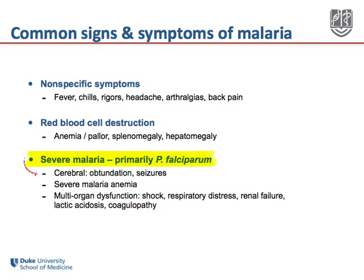One distinct form is cerebral malaria, which is marked by some degree of neurologic dysfunction, sometimes coma, often accompanied by seizures, and carries a very poor prognosis. Severe malarial anemia can also result from either chronic or acute infections. There is also a more nonspecific syndrome of multi-organ dysfunction, including circulatory collapse and shock, respiratory distress, renal failure, lactic acidosis, and coagulopathy.